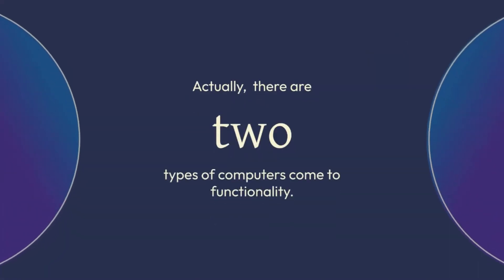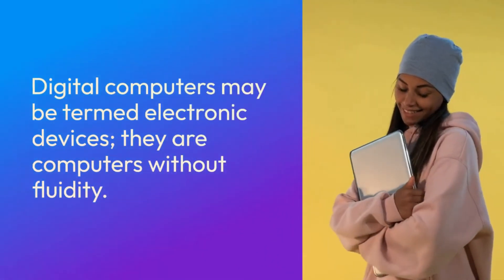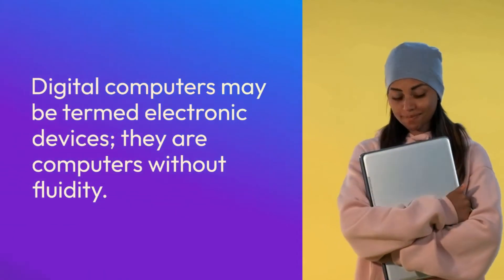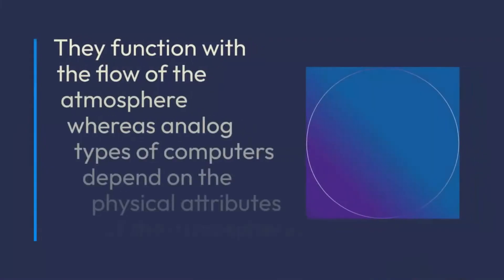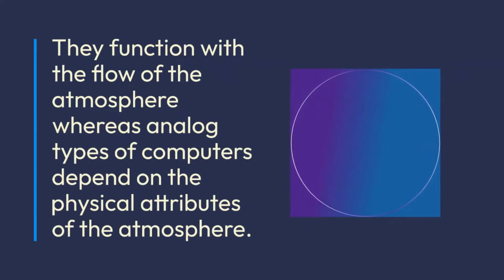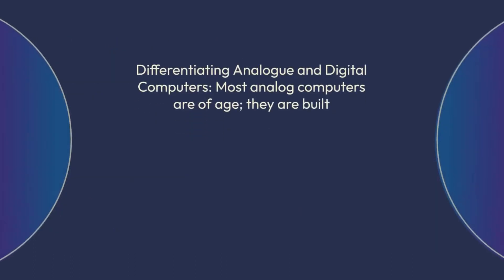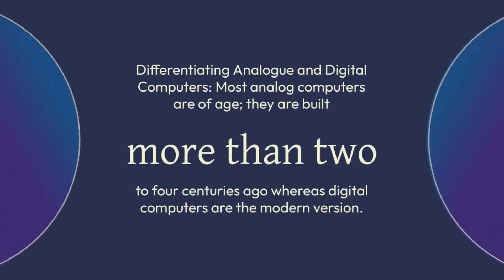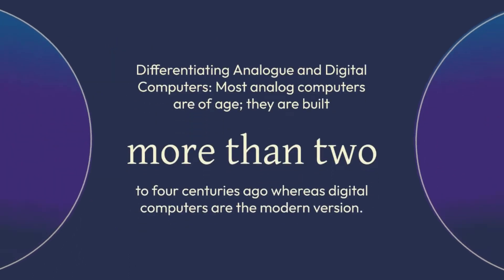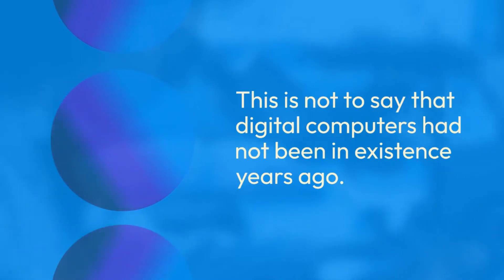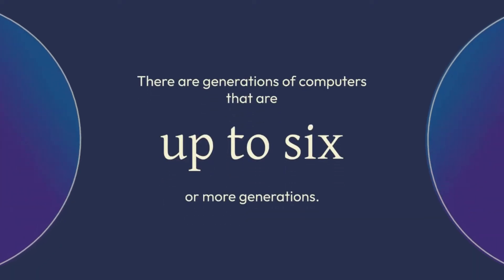There are two types of computers when it comes to functionality. We have analog and digital computers. Digital computers may be termed electronic devices — they are computers without fluidity. They function with the flow of the atmosphere, whereas analog types of computers depend on the physical attributes of the atmosphere. Most analog computers are of age, built more than two to four centuries ago, whereas digital computers are the modern version. This is not to say that digital computers had not been in existence years ago. There are generations of computers that are up to six or more generations.